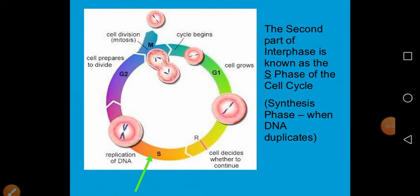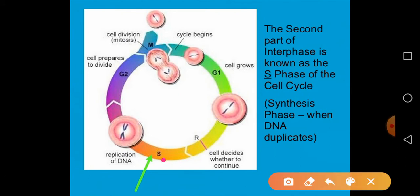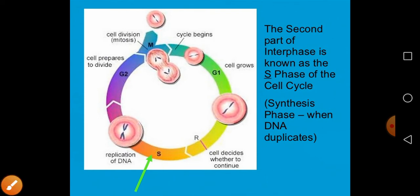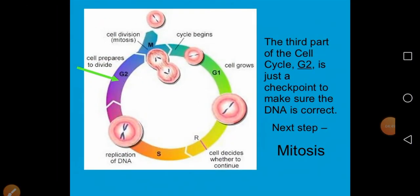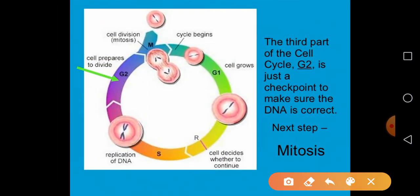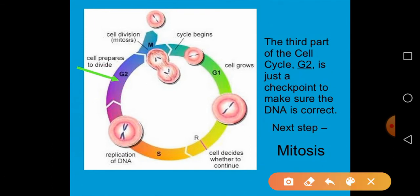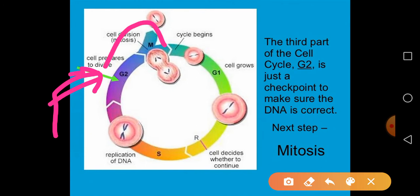The S phase is the synthesis phase, where DNA duplication or DNA replication takes place with the help of different enzymes, one of the main being DNA polymerase. The G2 phase is the second growth phase or second gap phase, where different proteins required for the M phase are synthesized.